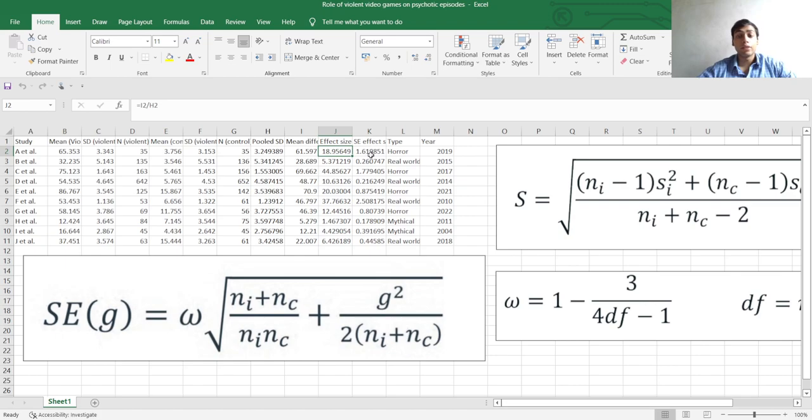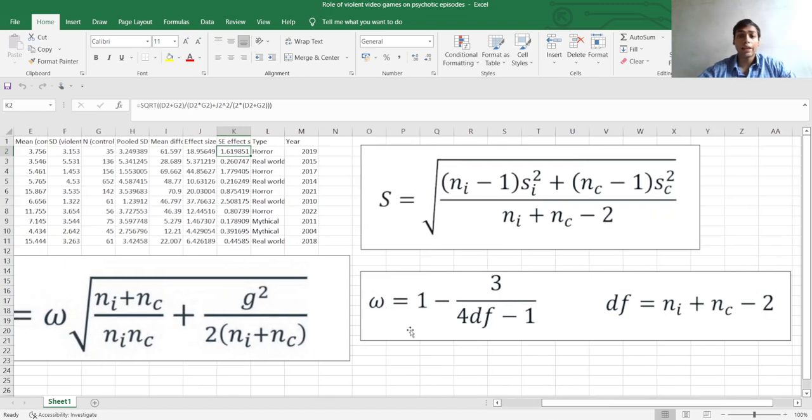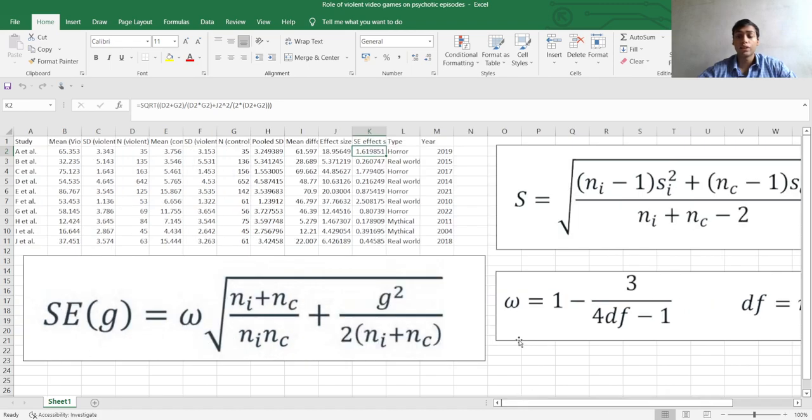The standard error of this effect size which in this case is Cohen's D can be calculated with the help of this formula. Here omega is calculated with the help of this formula. This is only used if the sample size of the study is small which is less than approximately 50 samples.